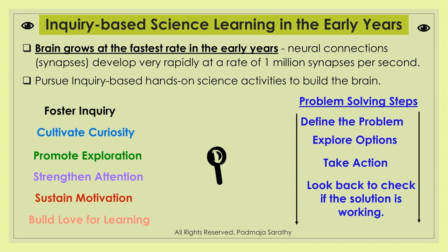As we close, I want to emphasize that it is extremely important to focus on science and inquiry-based thinking during the early years because the brain grows at the fastest rate then — one million neurons per second in the first years, up to age five and a half to six. Pursue these inquiry-based activities to foster inquiry, cultivate curiosity, promote exploration, and strengthen attention — a critical skill they need throughout school and adult life. Sustain their motivation with novelty and a multi-sensory approach. Build their love for learning — and that will last forever.